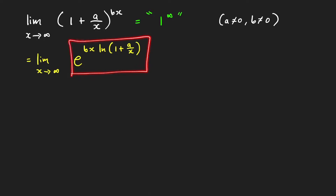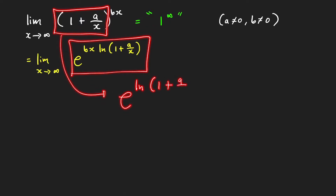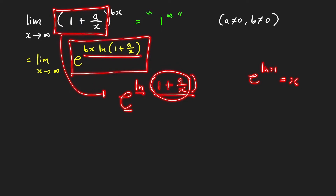How did we arrive at this expression? Keep in mind that this expression can be written as e raised to ln of (1 plus a over x). Recall that ln and e are inverses of each other — when you perform ln and afterwards perform e, you get the original input. This follows from the property e raised to ln x equals x. So our x is 1 plus a over x, and when we raise that to bx, we get bx times ln of the quantity 1 plus a over x as the exponent.